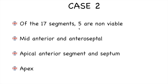In our report, we would say that of the 17 segments, five are non-viable: the mid anterior and anteroseptal segments, the apical anterior segment, apical septum, and the apex — which was also thinned and akinetic. This can be confirmed on four-chamber or two-chamber delayed enhancement images.